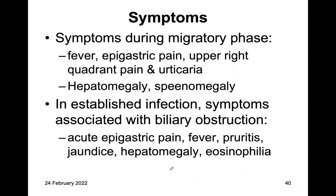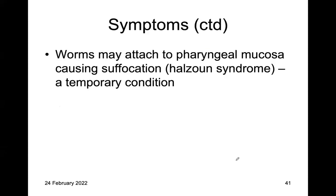During the migratory phase, symptoms include fever, epigastric pain, right upper quadrant pain, urticaria, hepatomegaly, and even splenomegaly. In established infection associated with biliary obstruction: acute epigastric pain, fevers, pruritus, jaundice, hepatomegaly, and eosinophilia. Worms may attach to the pharyngeal mucosa and cause Halzoun syndrome — when they go to the pharyngeal mucosa they can cause suffocation, which is a temporary condition. Halzoun syndrome is associated with Fasciola hepatica.